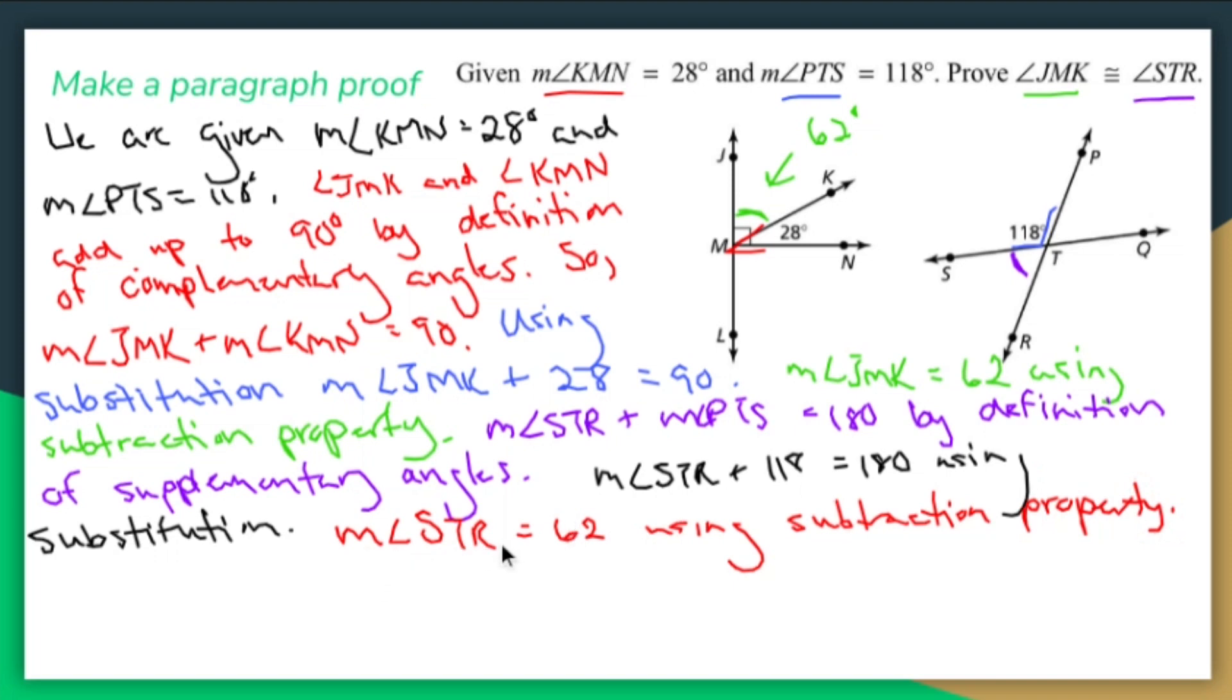Now that I know that the measure of angle STR is 62, and I found out up here that the measure of angle JMK is 62, I can now finally say that JMK is the same as STR. But first, I have to say the measure of JMK is the measure of angle STR using the transitive property. Transitive property says if A is C and B is C, then A is B. So using the transitive property.